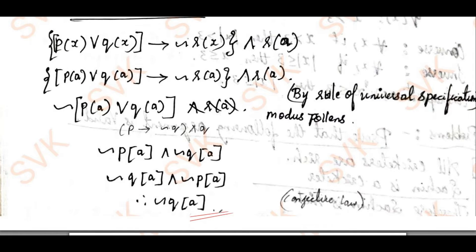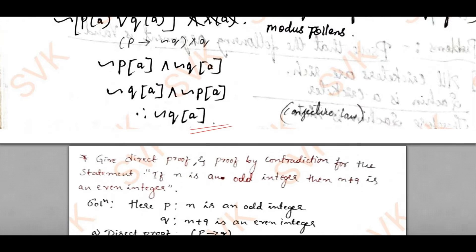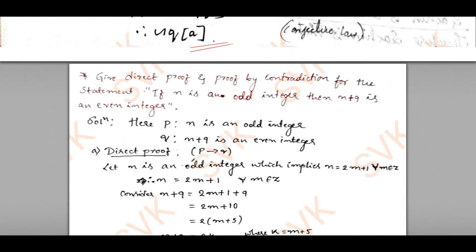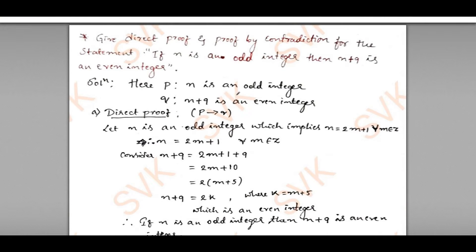We have proved that part. Moving on to the next problem — this is what I discussed in my previous video. Considering n as an odd integer and n+9 as an even integer, I need to show the proof by direct proof and proof by contradiction.